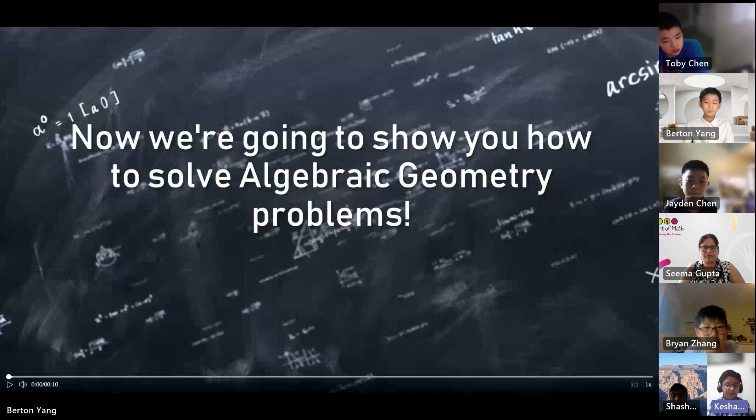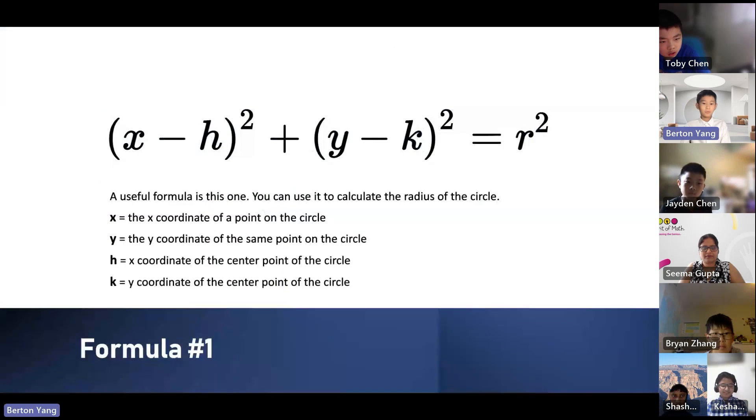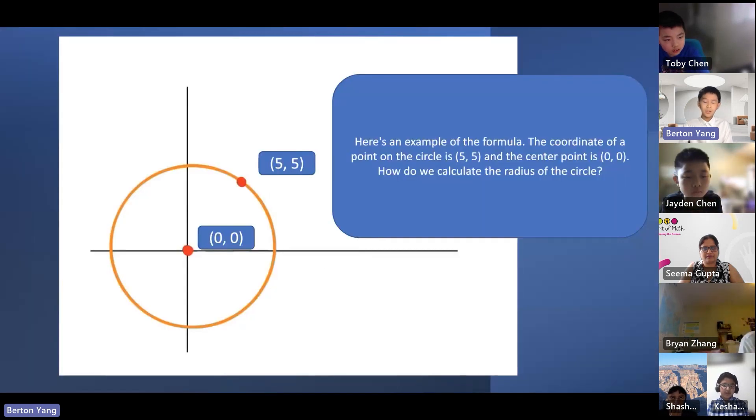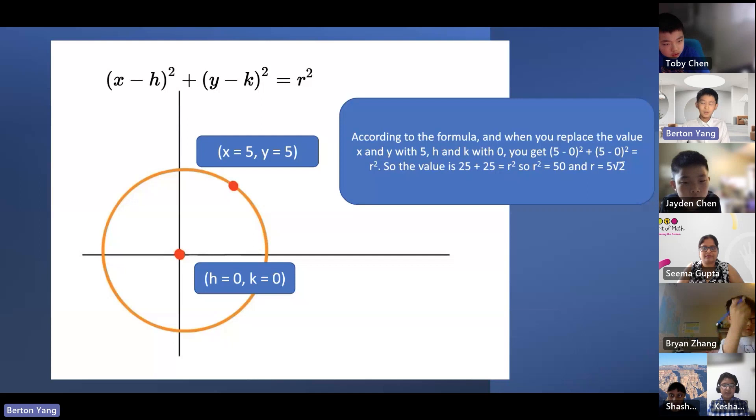Now we're going to show you how to solve algebraic geometry problems. A useful formula is this one. x minus h squared plus y minus k squared equals r squared. x equals the x coordinate of a point on a circle. y equals the y coordinate of the same point on the circle. Remember, it has to be the same point or it won't work. h equals the x coordinate of the center point of the circle and k equals the y coordinate of the center point of the circle.